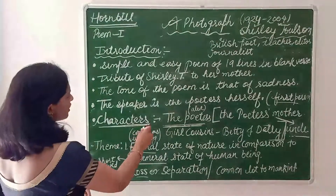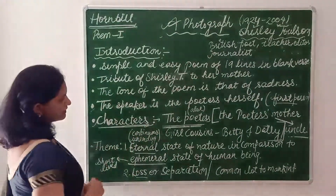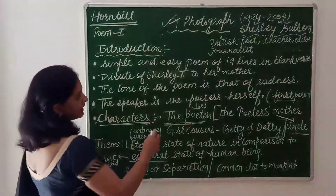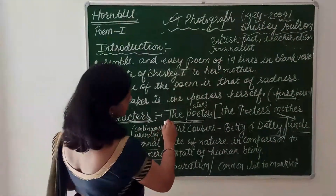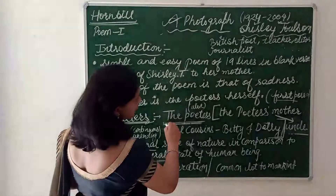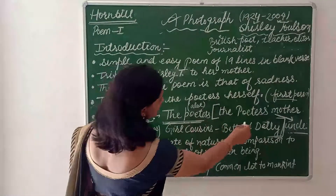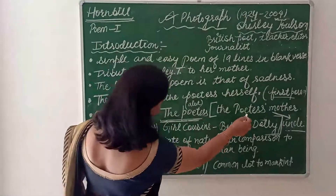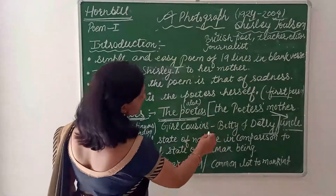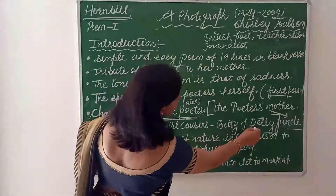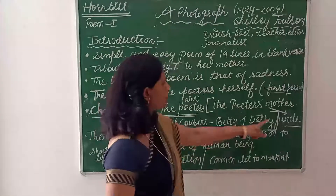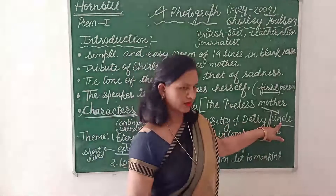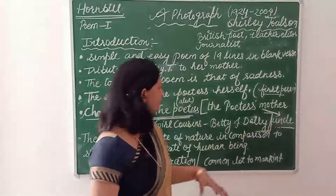Let's talk about the characters. There are the poetess, the poetess's mother, two girl cousins — Betty and Dolly — and the poetess's mother's uncle.